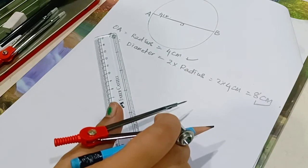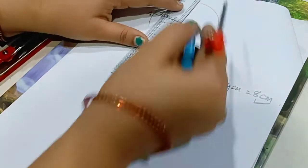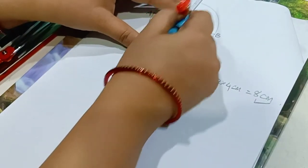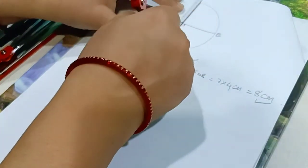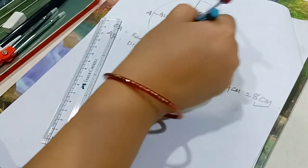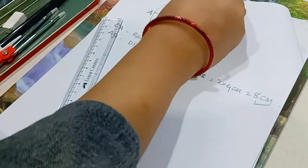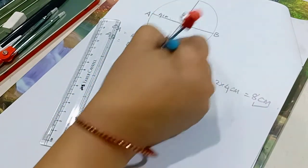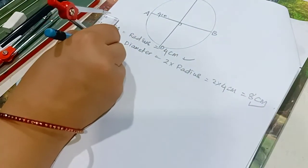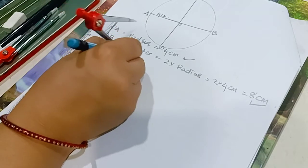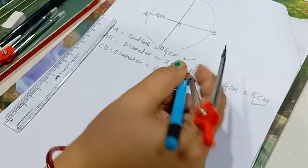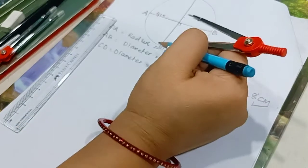Now join the ends of these diameters. Join from the starting, this is one diameter, and from this join this line. This is also diameter CD. Label this line with CD. CD is the diameter having same length, that is 8 cm. All the diameters have the same length, 8 cm.